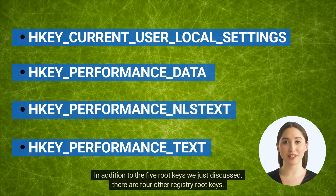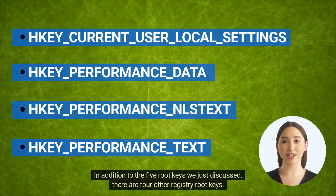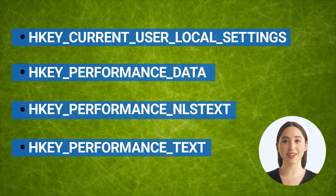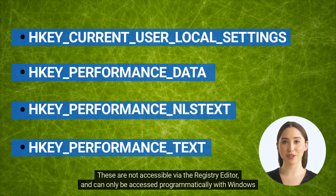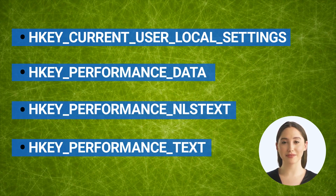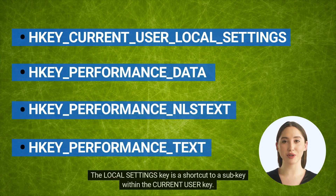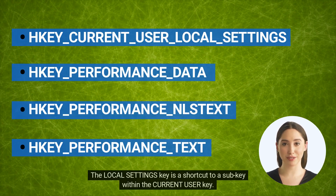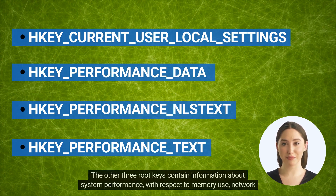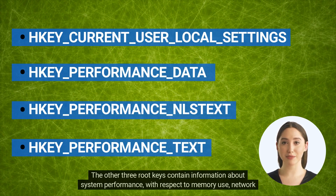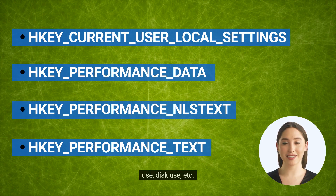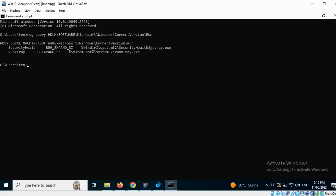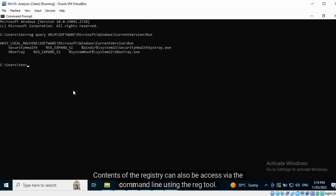In addition to the five root keys we just discussed, there are four other registry root keys. These are not accessible via the Registry Editor and can only be accessed programmatically with the Windows API. The local settings key is a shortcut to a sub key within the current user key. The other three root keys contain information about system performance with respect to memory use, network use, and disk use. The contents of the registry can also be accessed via the command line using the reg tool.